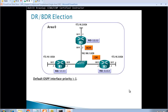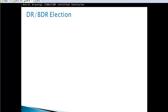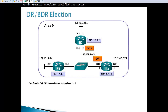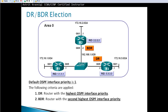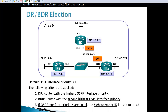DR and BDR election: the default OSPF interface priority is one. The DR is the router with the highest OSPF interface priority. The BDR is the router with the second highest. If OSPF interface priorities are equal, the highest router ID is used to break the tie.